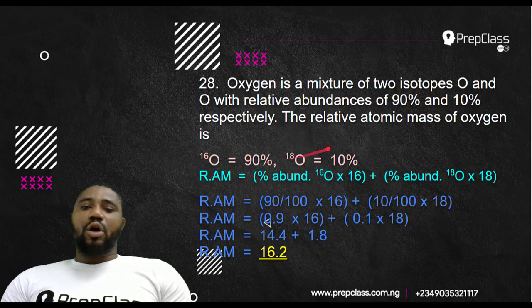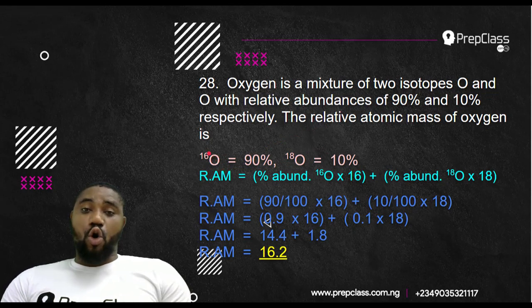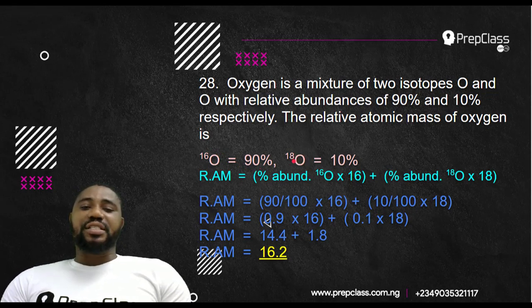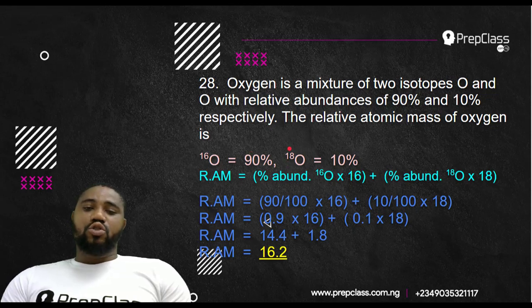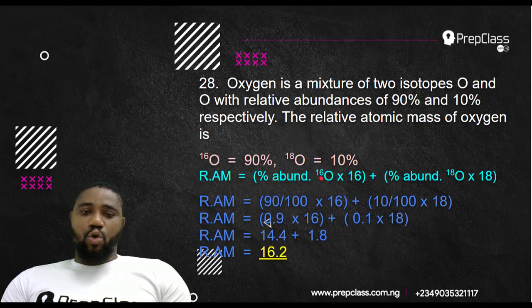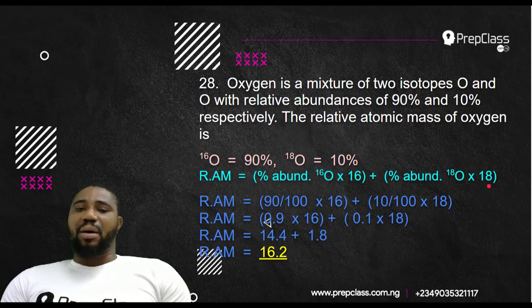Normally, these two isotopes of oxygen, whereby this one has a relative molecular mass of 16, in nature it occurs about 90%. While this other one that has a relative molecular mass of 18 occurs around 10%. So usually use this to determine the main relative molecular mass for oxygen. For you to do that, the formula says that relative molecular mass equals percentage abundance of one of them, let's say O-16, times its molecular mass, plus percentage abundance of the other one times its molecular mass.